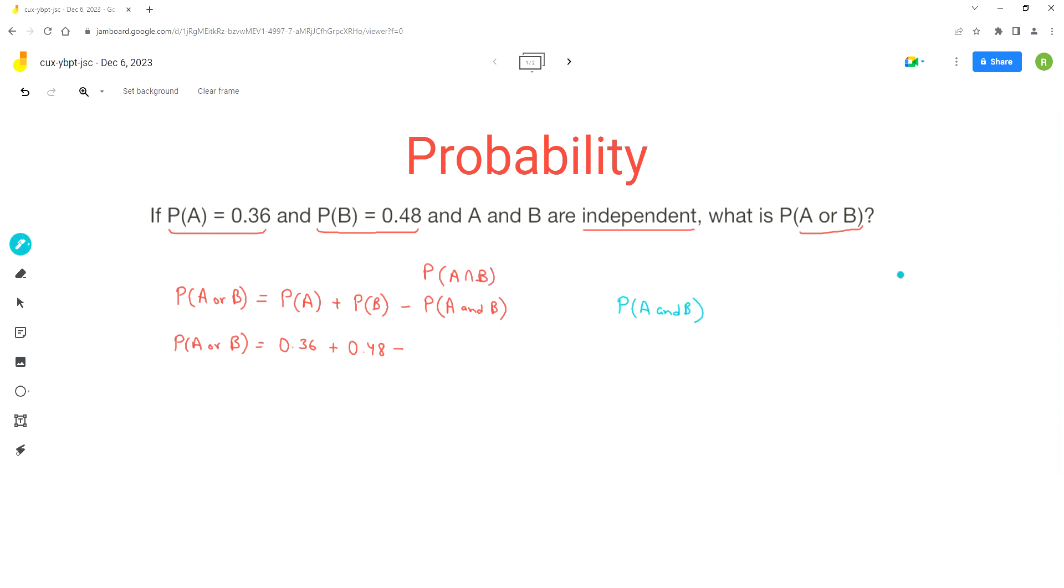So for independent events, the formula is that probability that A and B happen together is equal to probability of A times probability of B. So this is an important formula that you have to understand and memorize. And this formula is only good for independent events.